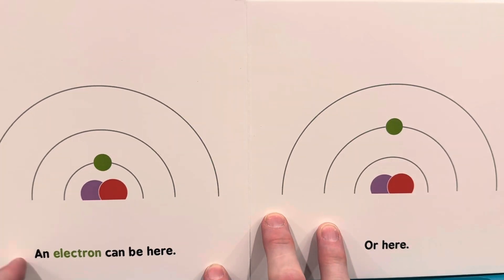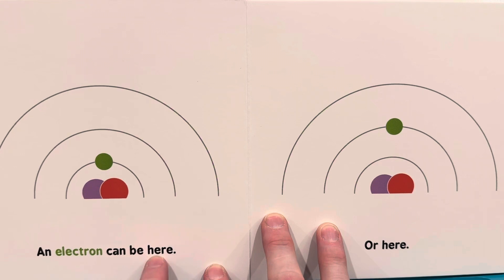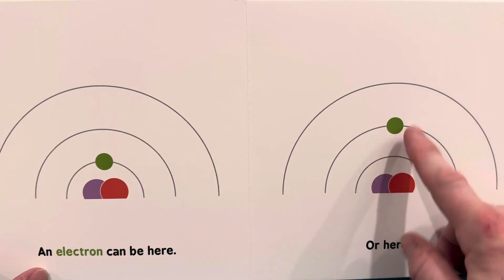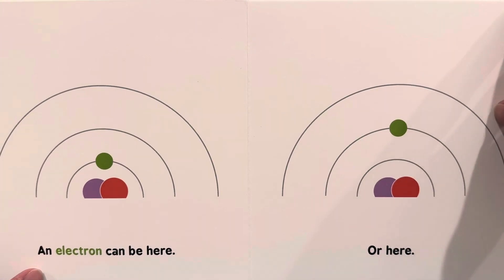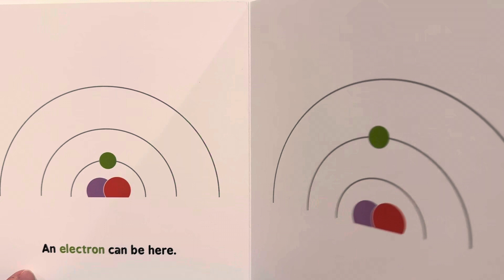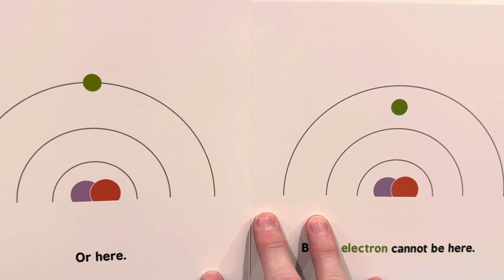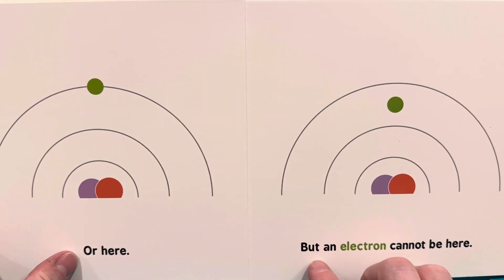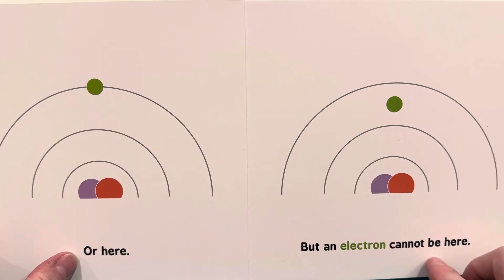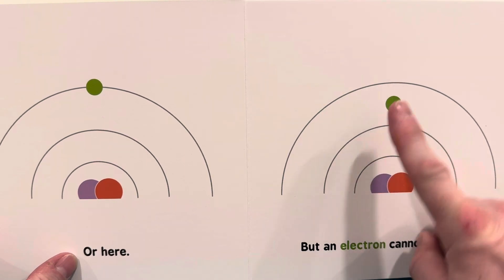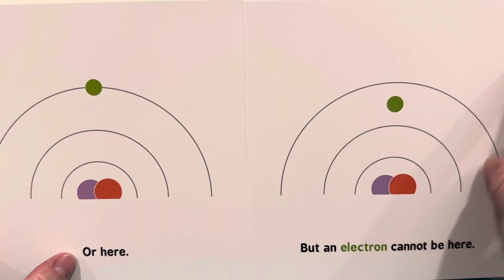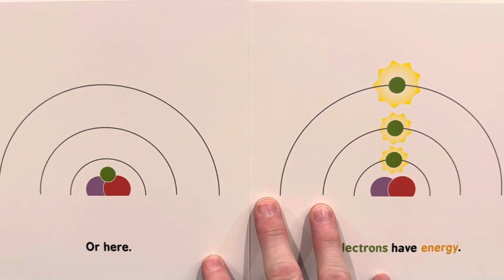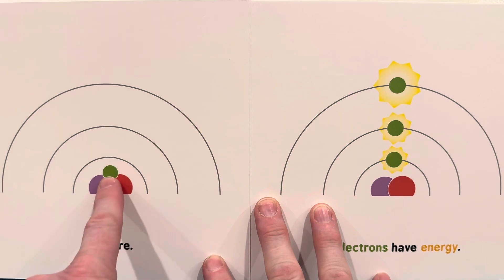An electron can be here or here. Or here. But an electron cannot be here. Or here.